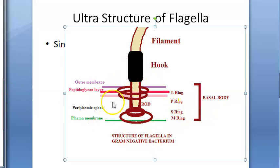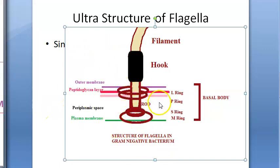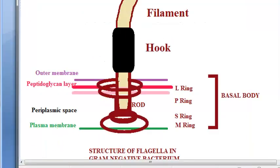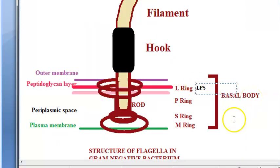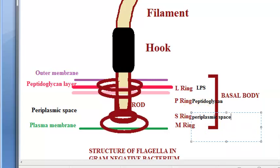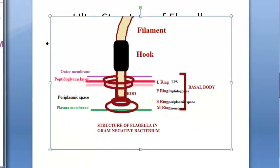What is drawn here is the ultrastructure of the flagellum in gram-negative bacteria. In most gram-negative bacteria there are four rings: the outer rings L and P associated with lipopolysaccharide and peptidoglycan layers respectively, S ring in the periplasmic space, and M ring which is the plasma membrane.